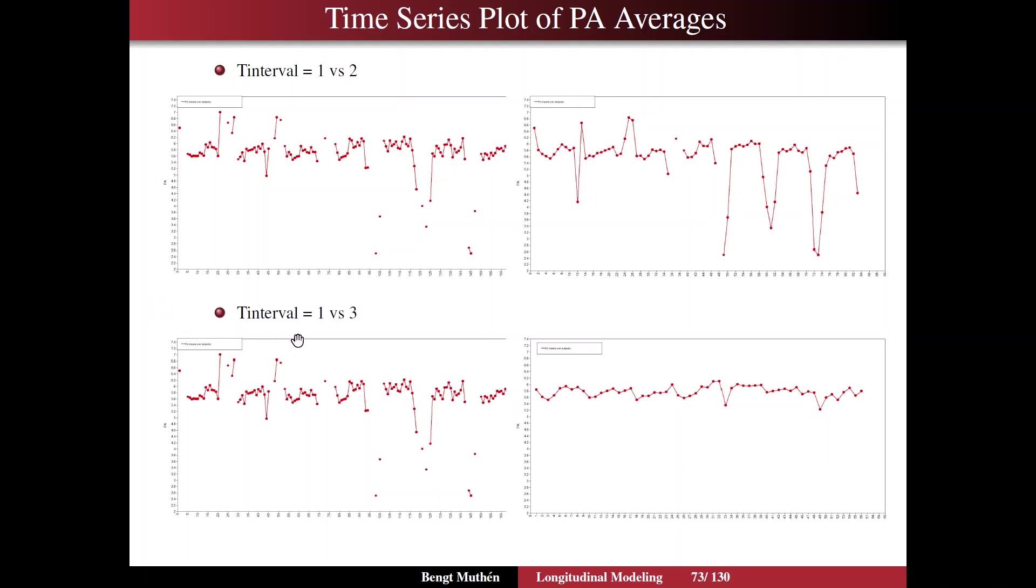At the bottom we compare time interval 1 versus 3, and with time interval 3 we have a much smoother development, but you almost lost the pattern here. So you would have to change the scale of the y-axis, which you can edit in the plot, to see what kind of pattern there is. Now this is averages with different choices for t-interval.